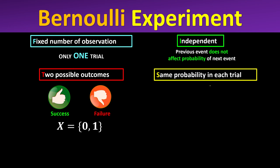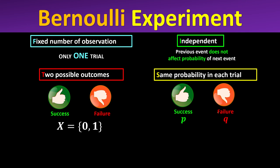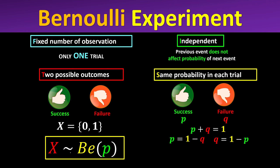The trials must have the same probability — if the first coin toss has probability p of success, then all subsequent trials have the same probability. Since Bernoulli has only one experiment, the probability stays constant. If the probability of failure is q, then q is constant for the entire experiment. When we add up the probability of success and failure we get one, so if given q we find p by using one minus q, and if given p we find q by using one minus p.